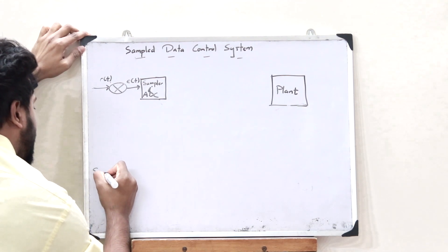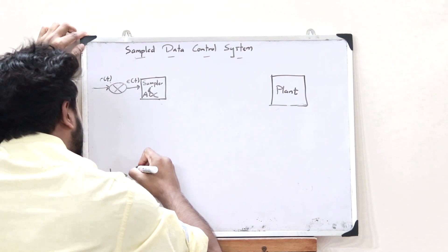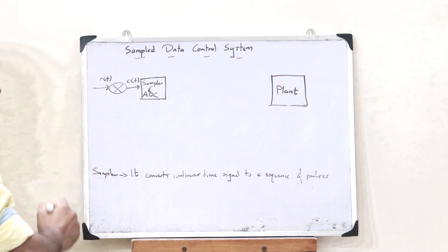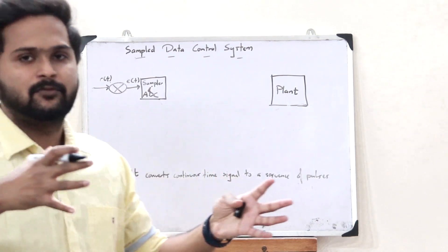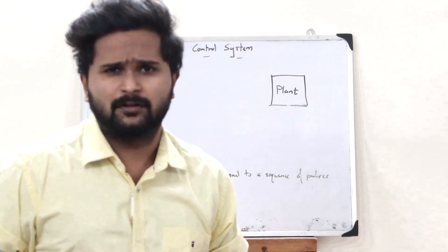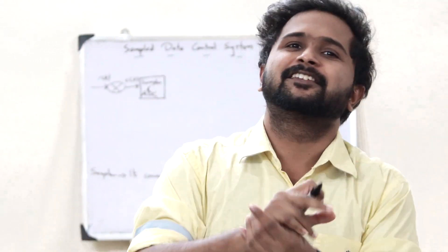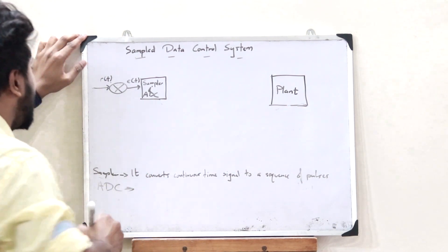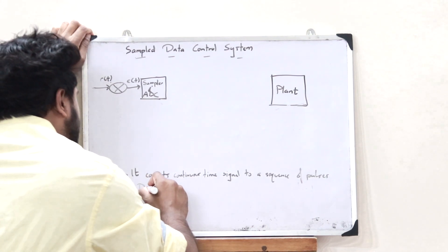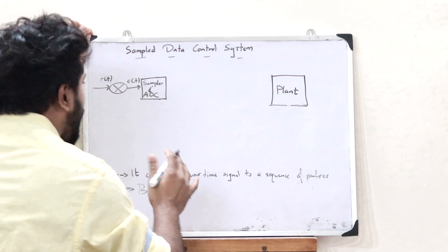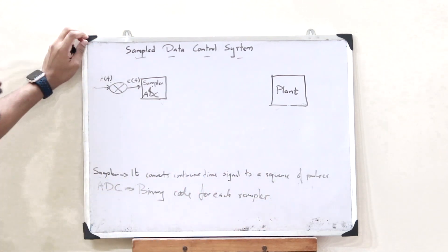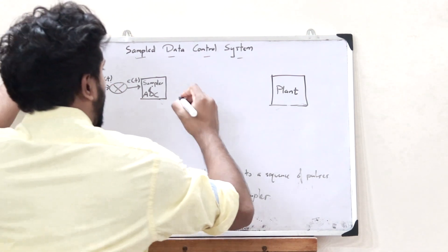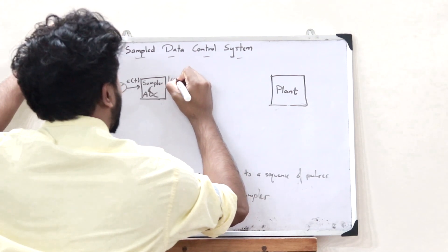What a sampler does is that it converts a continuous time signal to a sequence of pulses — or in simple terms, it converts a continuous time signal into a discrete time signal. An ADC, or analog to digital converter, gives a binary code for each of these samples. So now we have a digital signal, say F of KT, which is a sampled discrete signal.